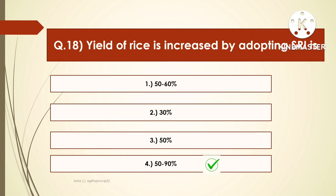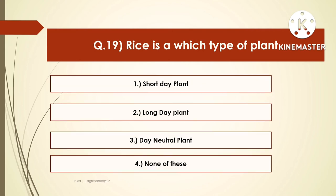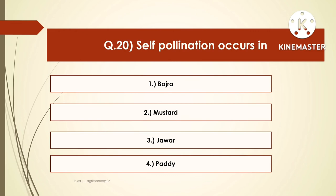The next question is: rice is which type of plant? Options are short day plant, long day plant, or day neutral plant. The right answer is short day plant. Rice is a short day plant. The next question is: self-pollination occurs in which crop? Options are Bajra, Mustard, Jowar, or Paddy. The right answer is Paddy. Paddy is a self-pollinated crop.